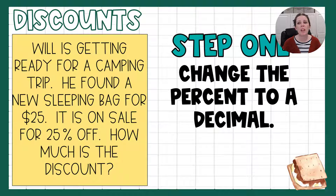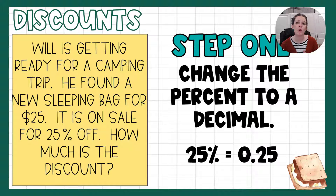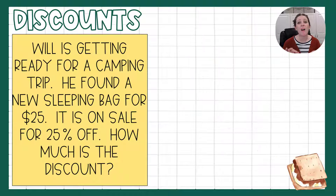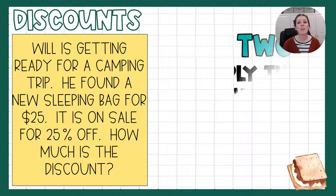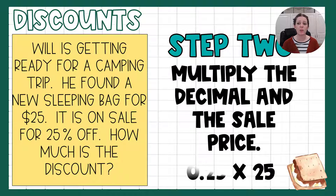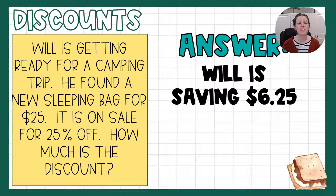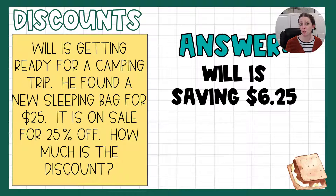Step one is to change the percent to a decimal. That is the same as when we found tax and tips. So we're going to take 25% and turn it into a decimal, which is 0.25. Step two is also the same — we're going to multiply that decimal, 0.25, by the sale price, so 0.25 times 25. That answer is $6.25. So his discount is $6.25. That's the same as sales tax and tip — nothing has changed.